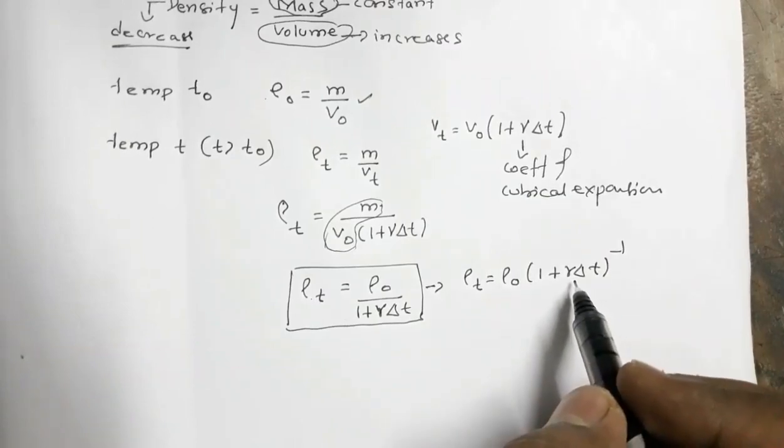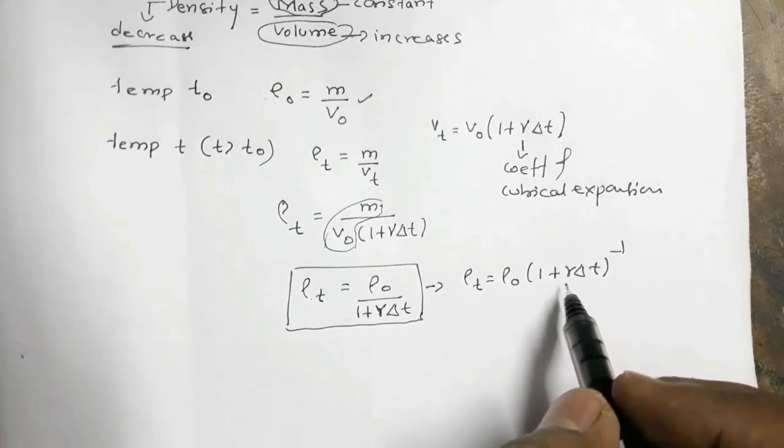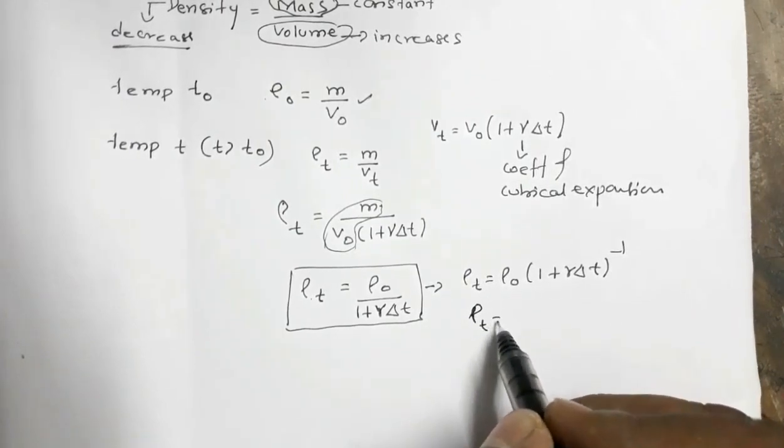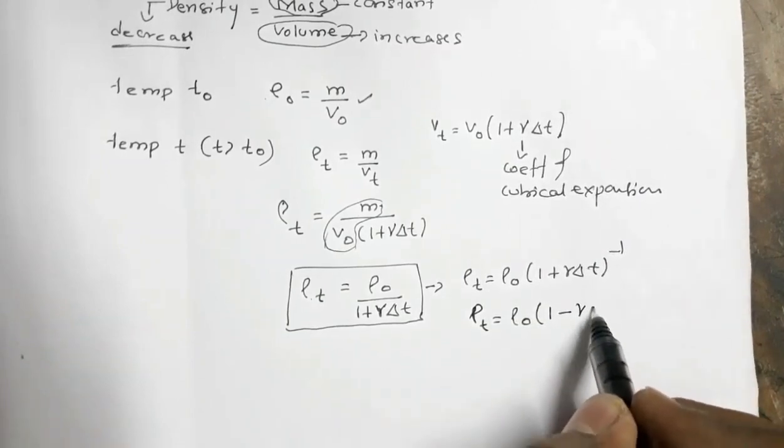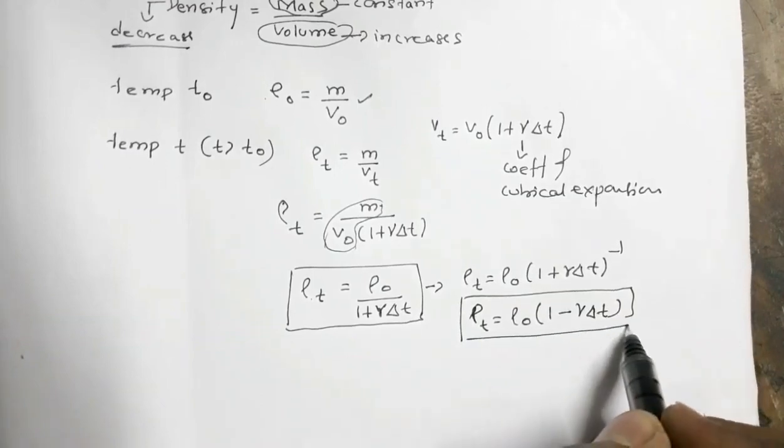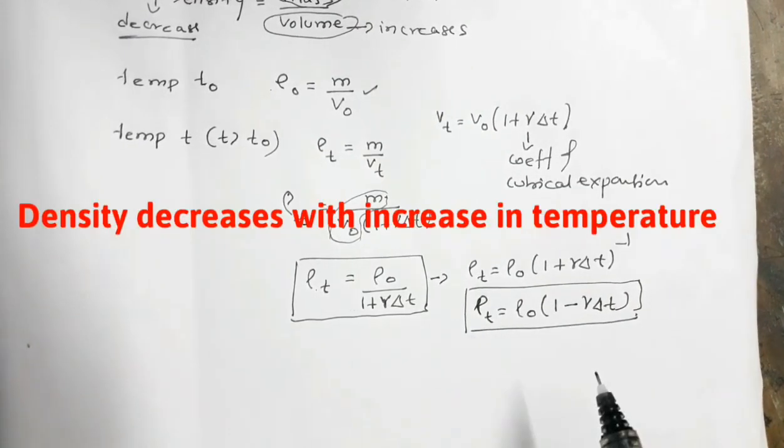The quantity gamma delta T is far less than 1. So I can apply binomial theorem, so from that I get ρT is equal to ρ0 times 1 minus gamma delta T. So this is the relation connecting variation of density with temperature.